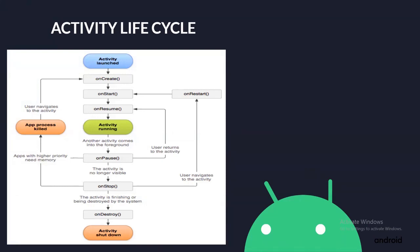In the OnPause method, the system calls OnPause as a first indication that the user is leaving your Activity. In the OnStop method, when your Activity is no longer visible to the user, the system invokes the OnStop method. The OnDestroy method is called before the Activity is destroyed.